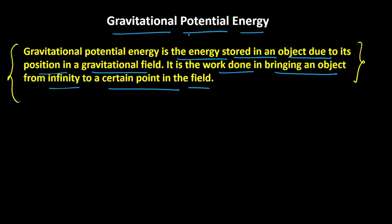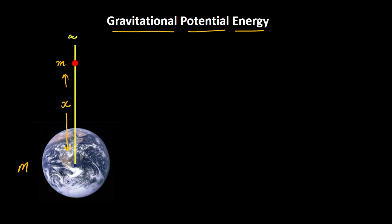Now, as per the definition of gravitational potential energy, it is the work done in bringing an object from infinity to a certain point in the field. Let us say I am bringing this mass m from infinity to a point at a distance R from the center of the Earth. The gravitational potential energy would be the amount of work done to bring this mass m from infinity to this distance R. We know the formula for work done is equal to the integration of F dx.